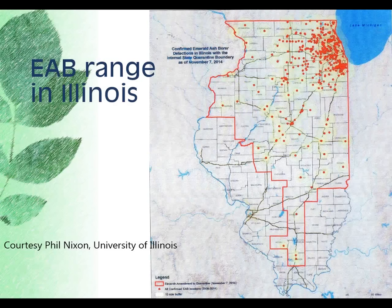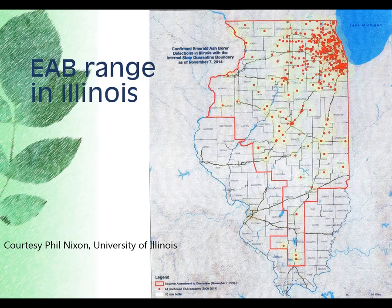An early spread map from Illinois shows that infestations seem to follow major highway routes across the state. Emerald ash borer can spread naturally on the ground, but it is significantly aided by humans. The principal transport mechanism is probably firewood — anyone who cuts down an infested ash tree and uses it for firewood should not be transporting that firewood out of the area. Informing people not to transport firewood will have to be a major part of our educational effort to slow the spread in Texas.